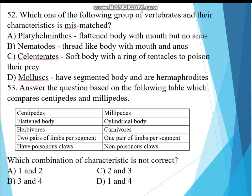Question 52. Which of the following groups of invertebrates and their characteristics is mismatched? A. Platyhelminthes - flattened body with mouth but no anus, B. Nematodes - threadlike body with mouth and anus, C. Cnidarians - soft body with a ring of tentacles to poison their prey, D. Mollusks - have segmented body and are hermaphroditic. The answer must be D, mollusks. Mollusks do not have segmented body and are not all hermaphroditic.